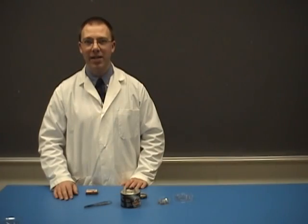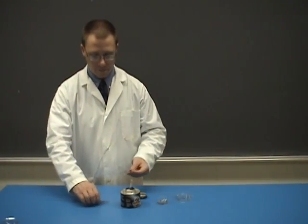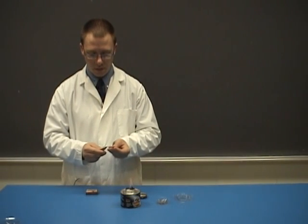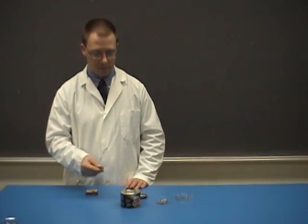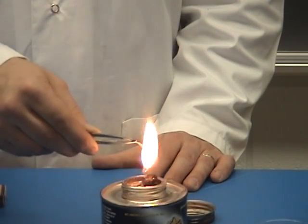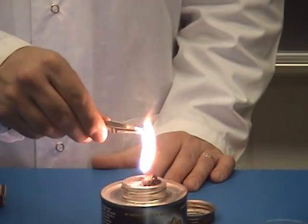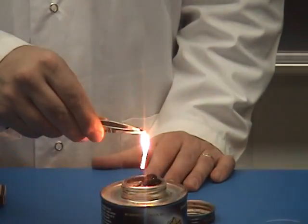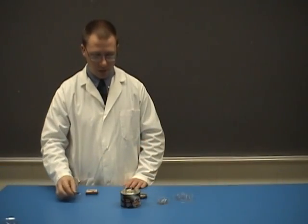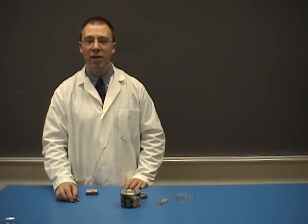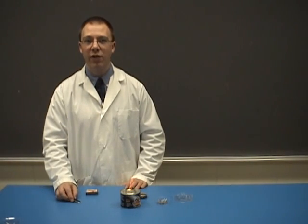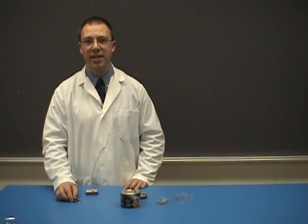Observe the properties of the magnesium. Using tweezers, put it in the flame until it's red hot. After the reaction, observe the properties. We can conclude that this is a chemical change because what is produced after the reaction is different than what we had before. Also, the release of light and heat indicates this is a chemical reaction.